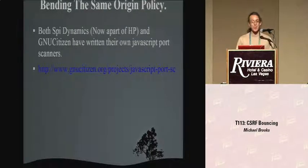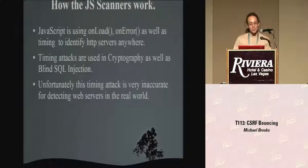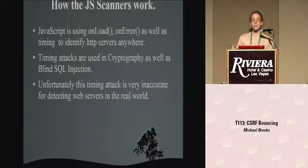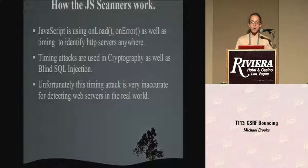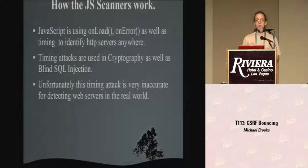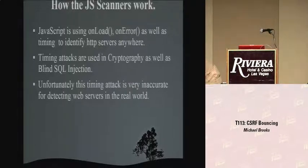Spy Dynamics released a very cool tool - a JavaScript port scanner. The port scanner uses two different methods for detecting services. One of them is onload and onerror, looking at the response times from requests. This method I can't get to work reliably for a real-world exploit. However, there's another method: you're able to read a remote image on a system, and if you know the path to the image, you can read the file dimensions. Using this method, you are able to identify embedded network hardware.